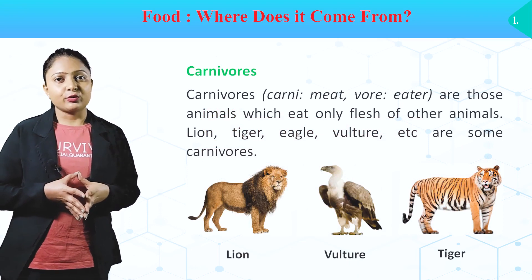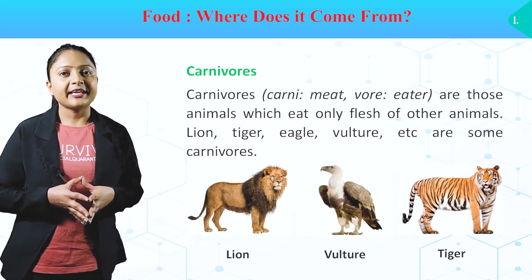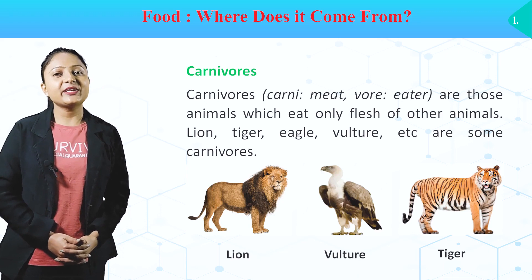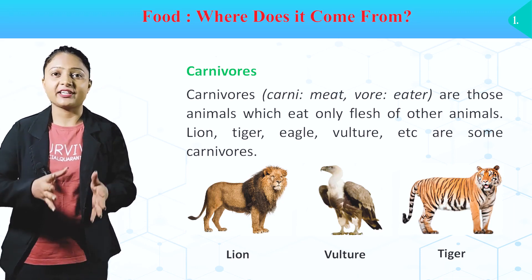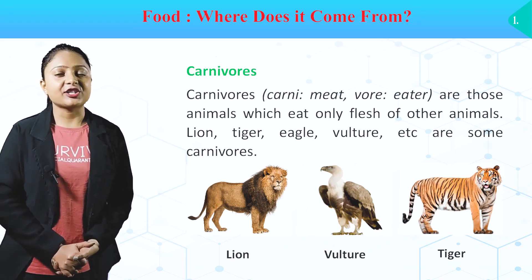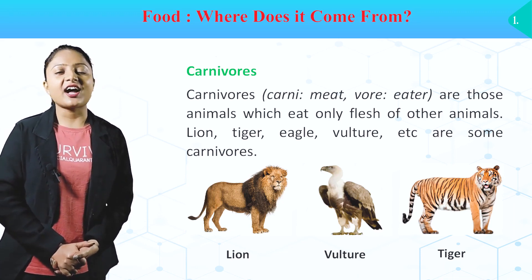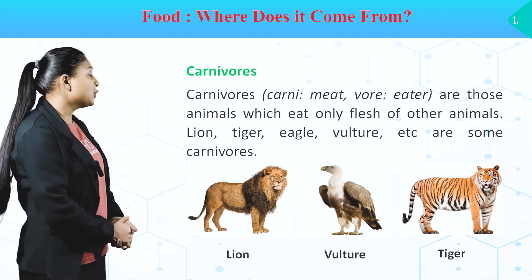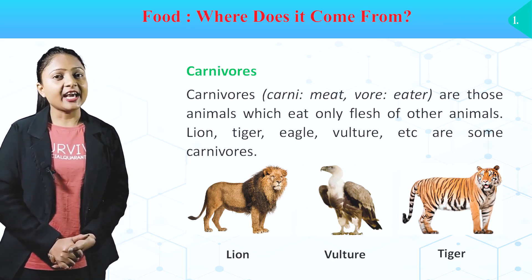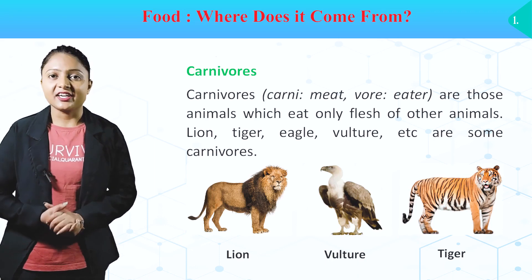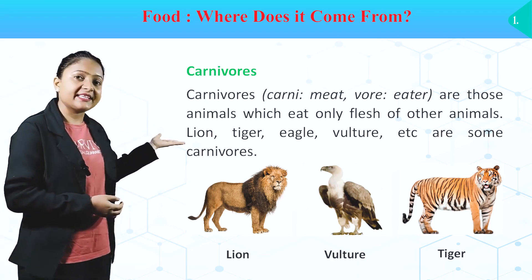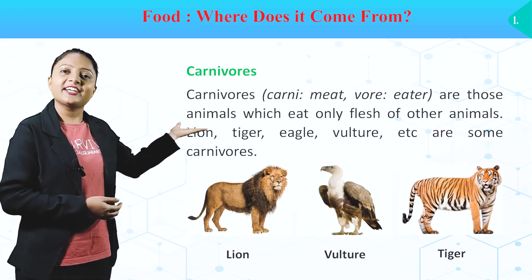Carnivores. 'Carni' means meat eater. These are animals which eat only the flesh of other animals. Lion, tiger, eagle, vultures, etc. are some carnivores. Jo animals doosre animals ka meat khaate hai unhei carnivores kehte hai. In pictures mein unke example diya hai — lion, vulture, tiger.